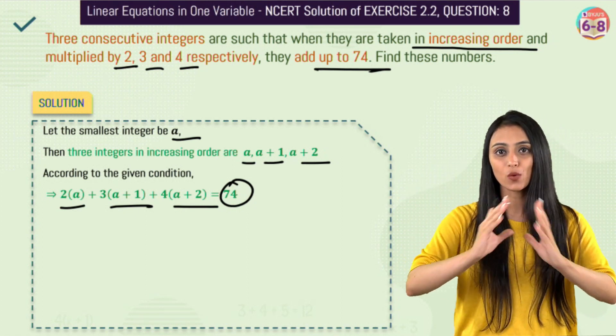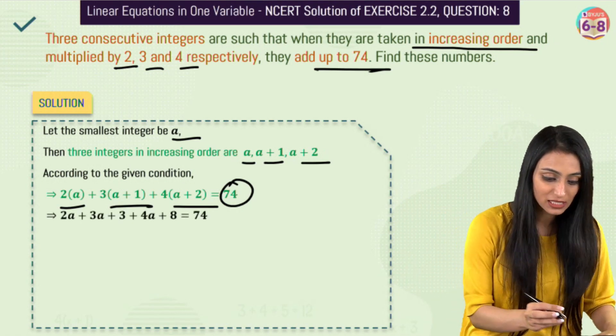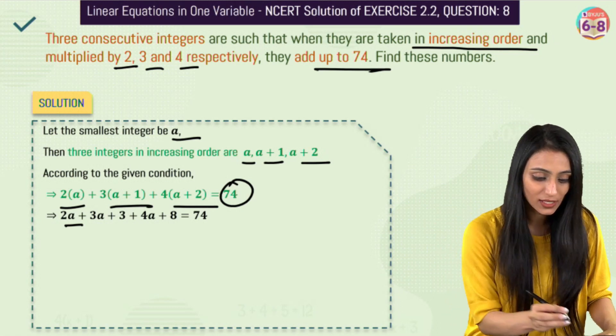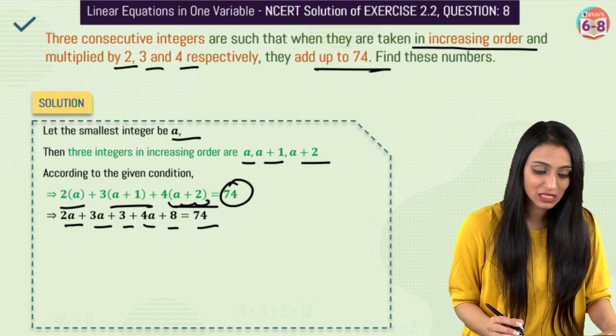So we have done the word by word translation, literal translation of the statement. Now we just have to simplify this. So 2 times a is going to be 2a. 3 times a plus 1 is going to be 3a plus 3. 4 times a plus 2 would be 4a plus 8 equals to 74.